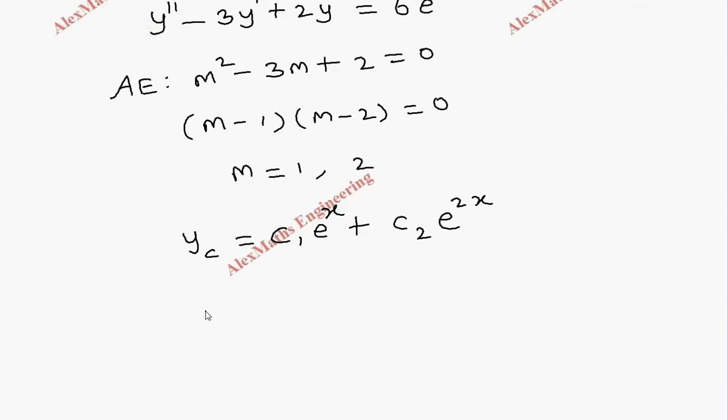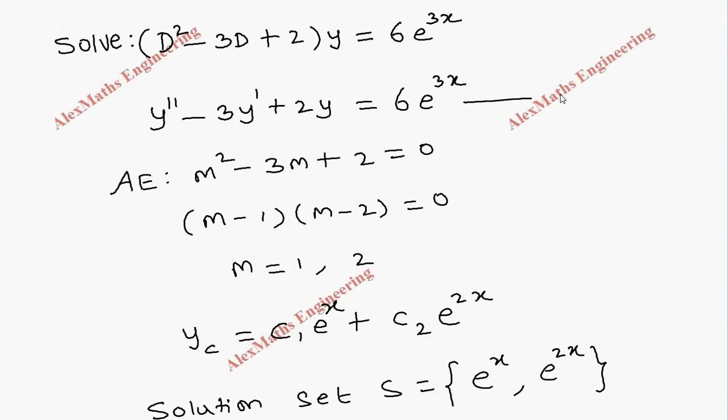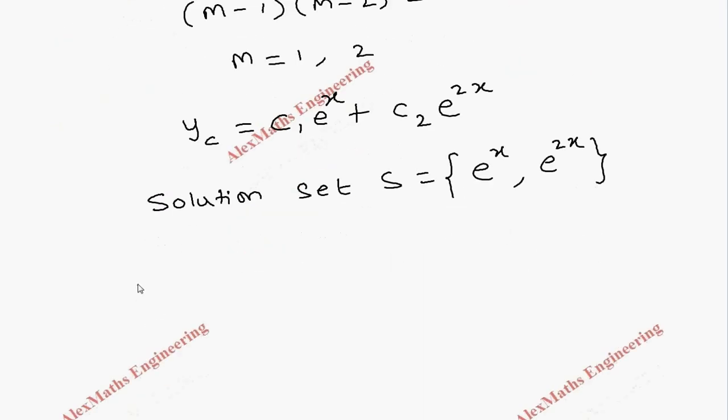Now the solution set S consists of e^x and e^2x, but the right hand side of this equation is having e^3x, so e^3x is not part of the solution set S.